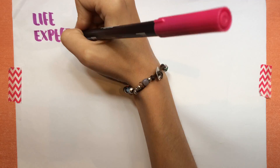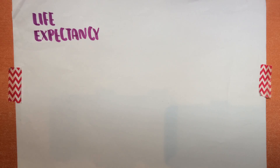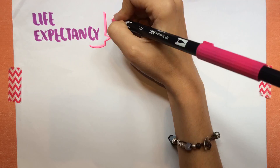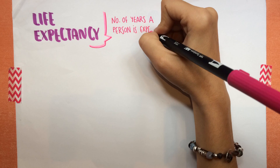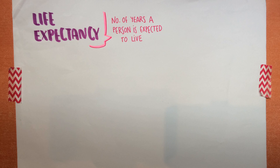Life expectancy is another characteristic of population and it refers to the number of years that a person is expected to live.